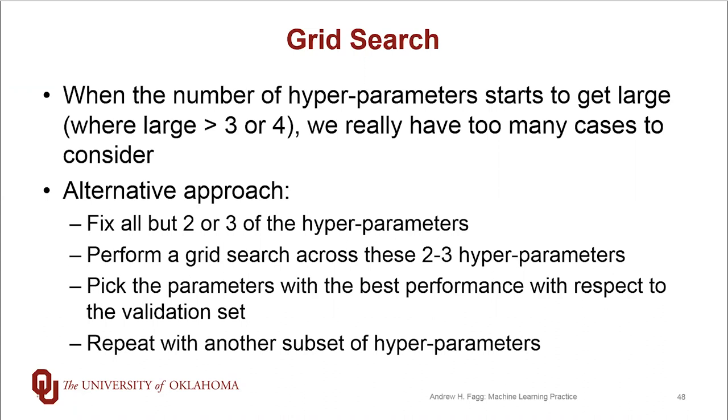So when this number of hyperparameters starts to get large, and large is maybe bigger than three or four, depending upon how many parameter values you're testing, it starts to get to the point where we have too many cases to consider all of them. An alternative approach to doing the full Cartesian product of possibilities is to take more of an iterative approach. This involves fixing all but say two or three of our hyperparameters. Then we perform a grid search across those hyperparameters, pick the hyperparameters that do best, and then we hold those constant and pick a new subset of hyperparameters and repeat that process.